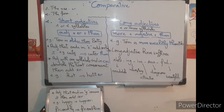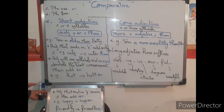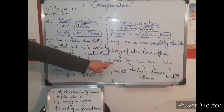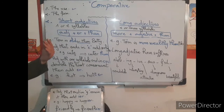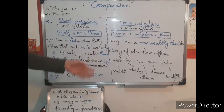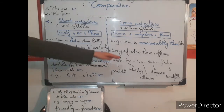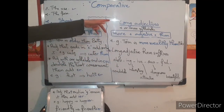Students often ask how to identify a long adjective, since two-syllable adjectives can go either way. The answer is that long adjectives typically have suffixes at the end: -able (readable, comfortable), -ing (interesting, exciting), -ive (attractive, active), -ous (gorgeous, dangerous), and -ful (beautiful, hopeful). When you see these suffixes, you know it's a long adjective.